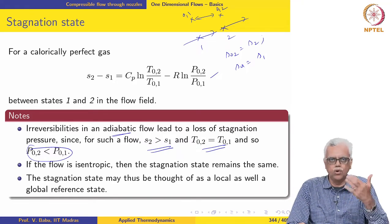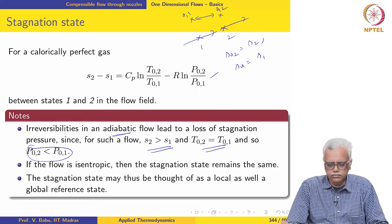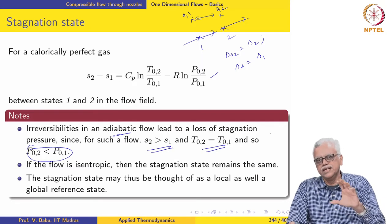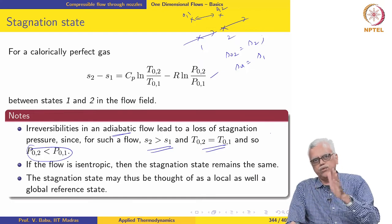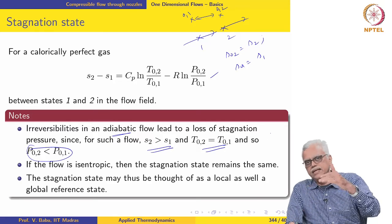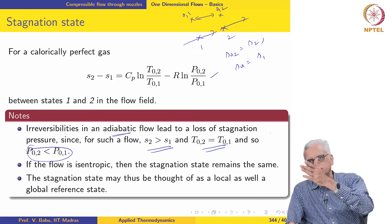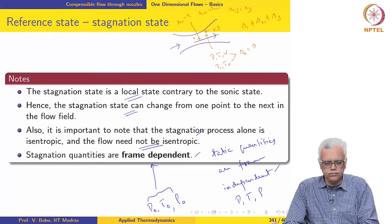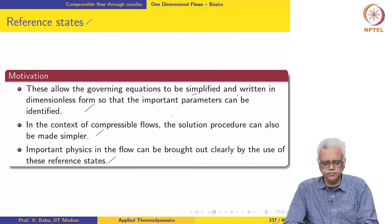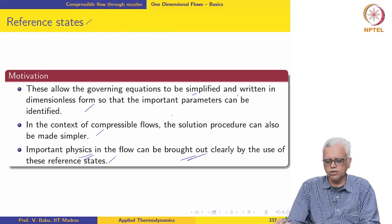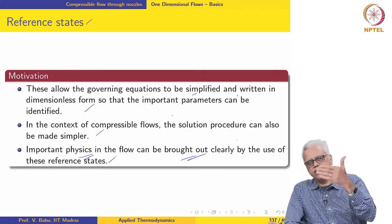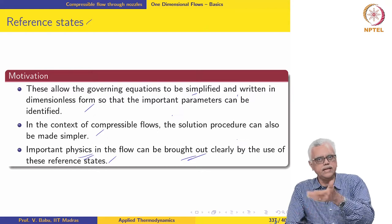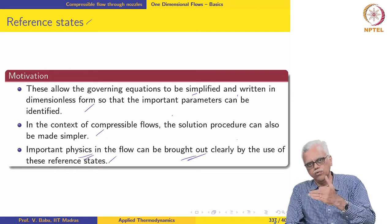In an isentropic flow, the stagnation state becomes a global reference state because it is the same for the entire flow. The stagnation state can be thought of as both a local and a global reference state. If stagnation pressure changes from one point to another, we can infer that, in the absence of heat interaction, there must be an irreversibility. This shows how stagnation state conveys information about irreversibility, work addition or removal, and heat addition or removal in the flow field.